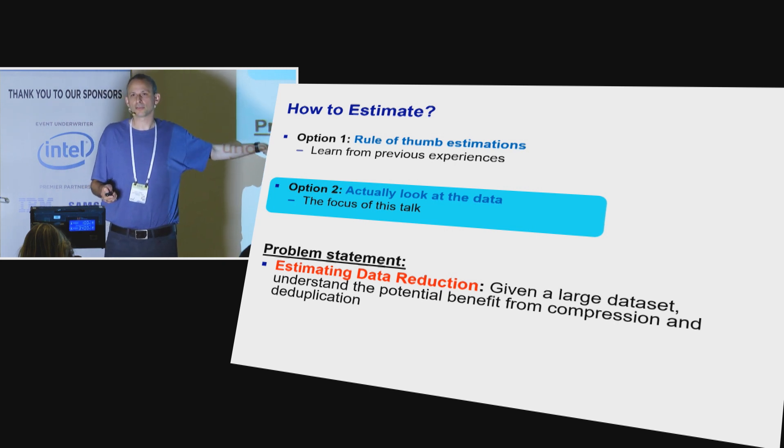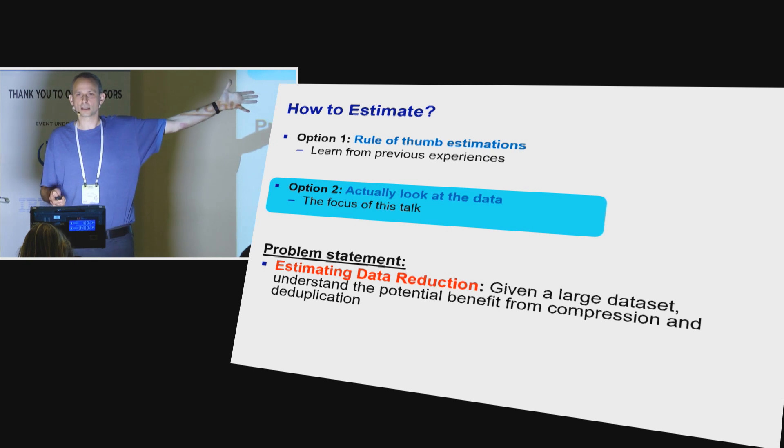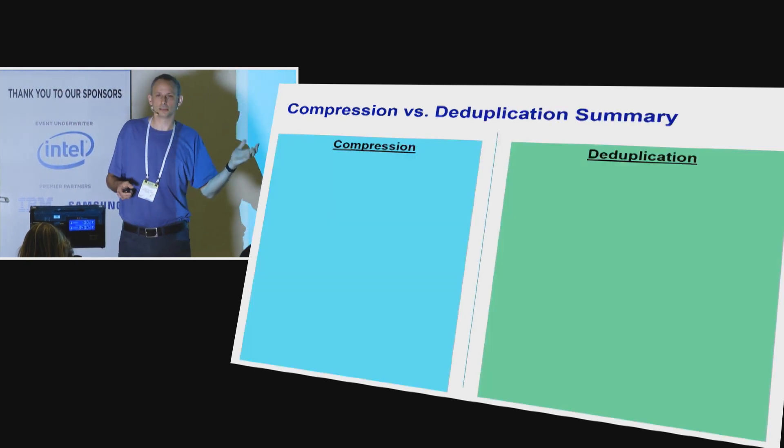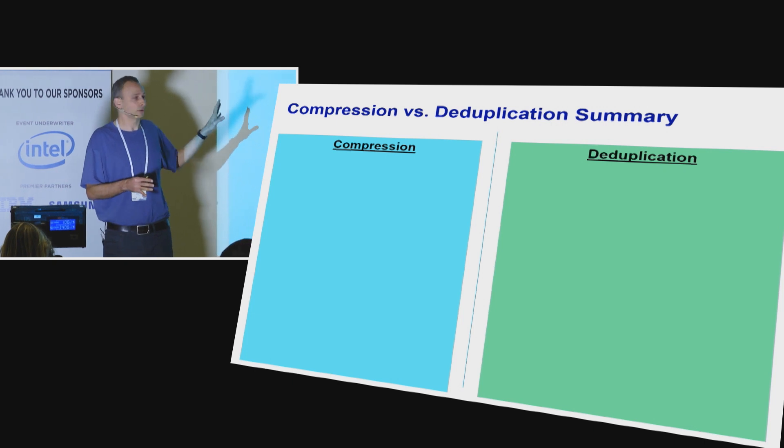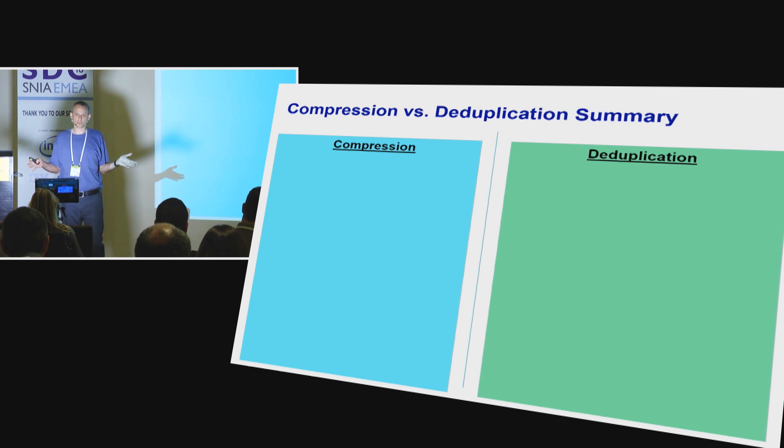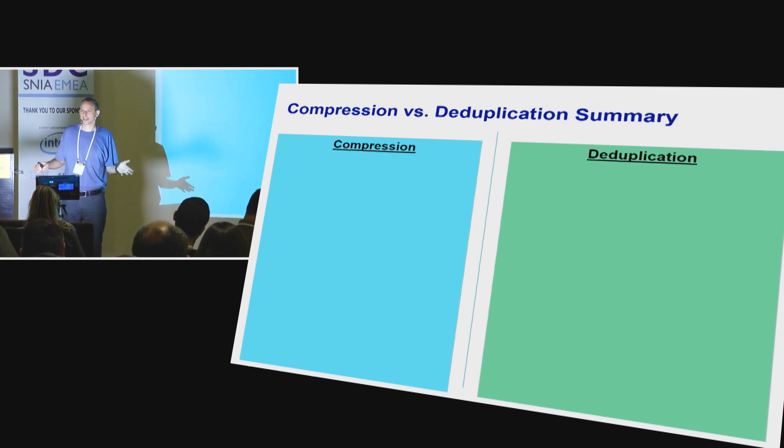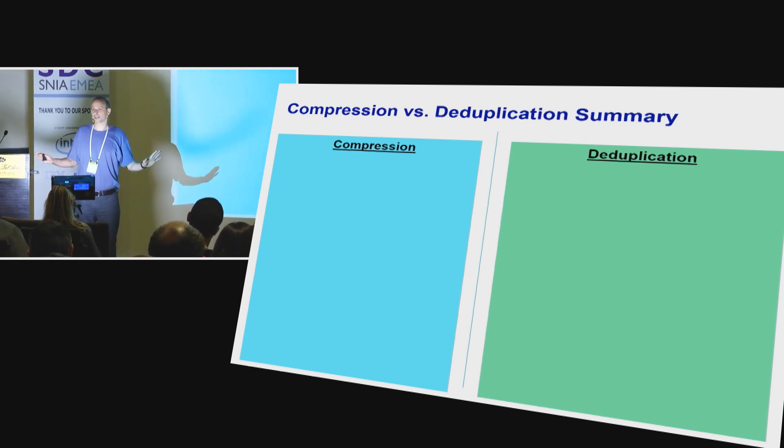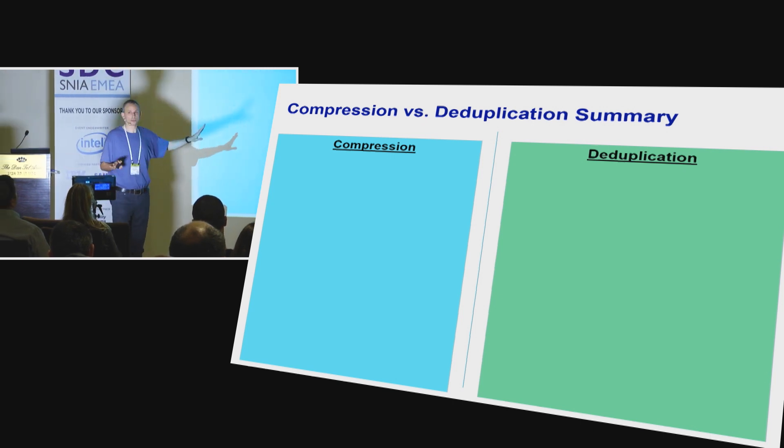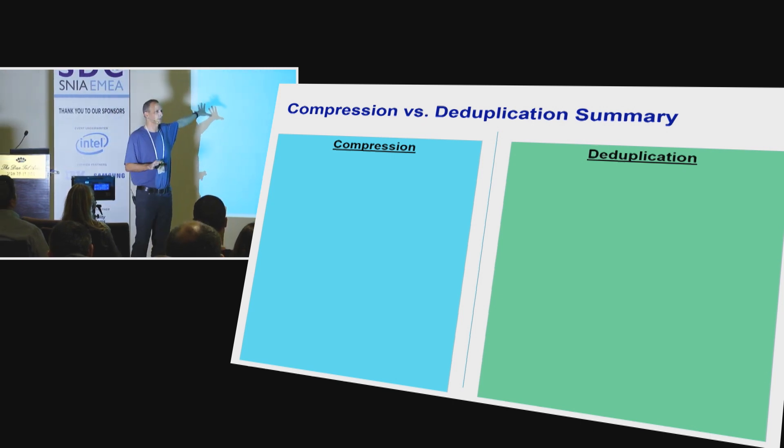I'm going to dive right to the end of summarizing all the results that we have. But the first summary, the first point to make is you have compression and deduplication. The results in this domain of estimation of data reduction are really, really different for the two techniques. So compression and deduplication, I'm going to show results for compression and deduplication. They're going to be very far apart.